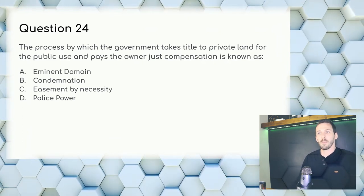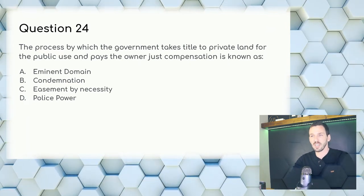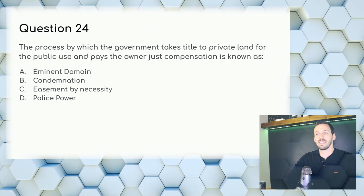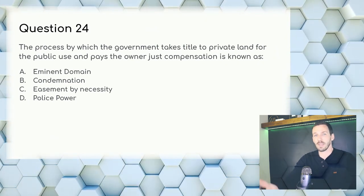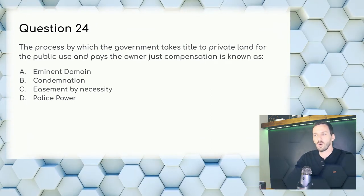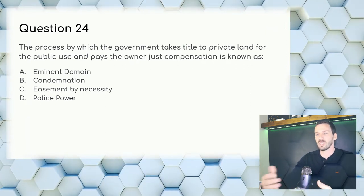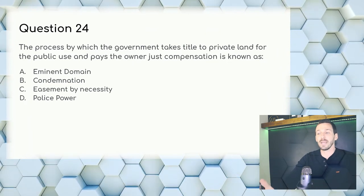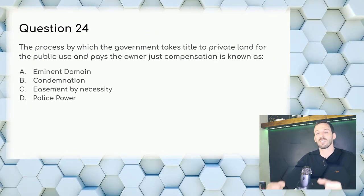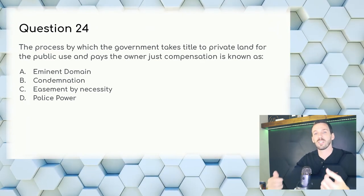Question 24: The process by which the government takes title to private land for public use and pays the owner just compensation — this should come down to a 50/50 quickly. Eminent domain is the legal authority for the government to take your property; condemnation is the actual physical act or process. Answer: B, condemnation.